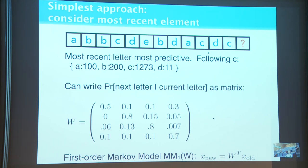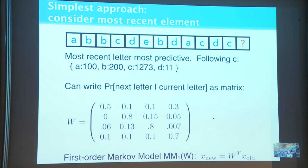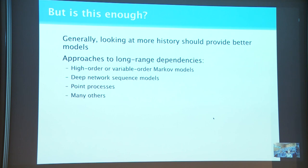The simplest approach would be to use a first-order Markov model. In this setting, the most recent letter — letter C right before the question mark — is most representative of the user's current state and should be the most predictive. We ignore the rest and write the likelihood of a particular element following C based on count statistics. We normalize these to produce the transition matrix of the Markov chain and then have an equation for the evolution of the process.